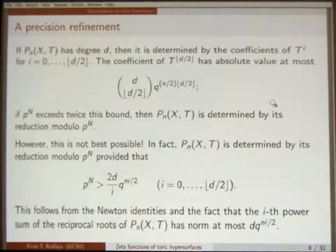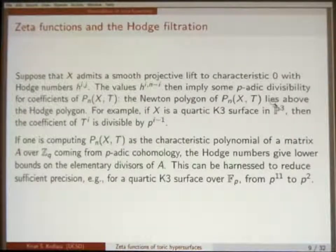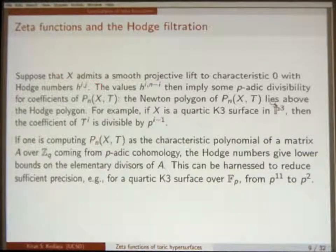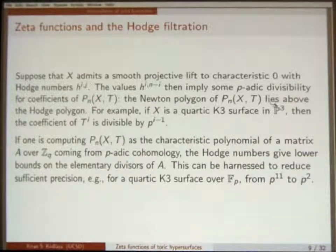So that's one precision refinement: use control via power sums instead of elementary symmetric functions. The other precision refinement worth keeping track of — because it will make a big difference in the example I'm going to show — is to use the Hodge filtration. If you know that X has a smooth projective lift to characteristic zero with certain Hodge numbers, then those Hodge numbers imply some divisibility property for the coefficients of the polynomial P_N. Specifically, the Newton polygon lies on or above the Hodge polygon.